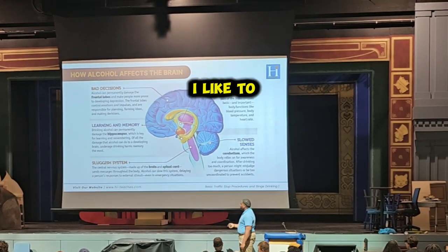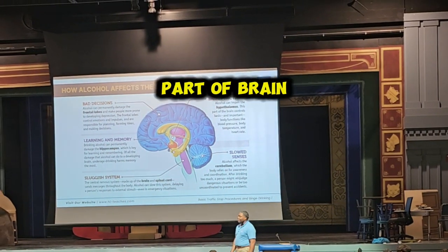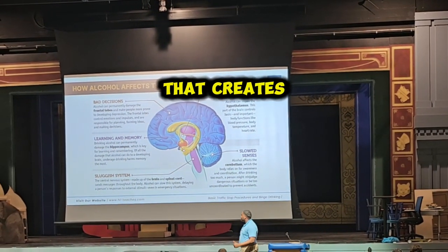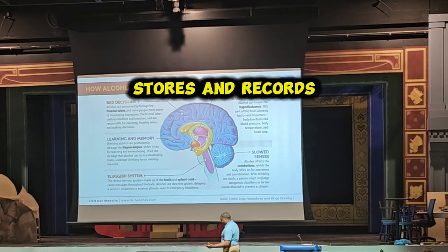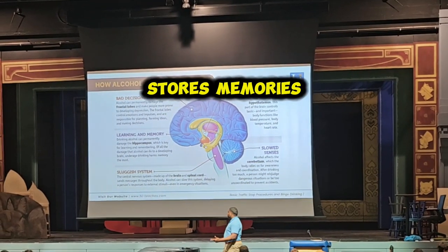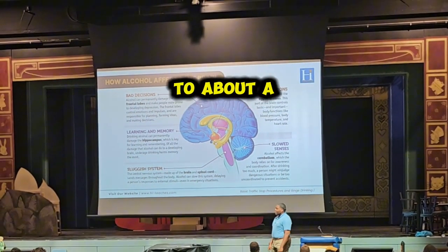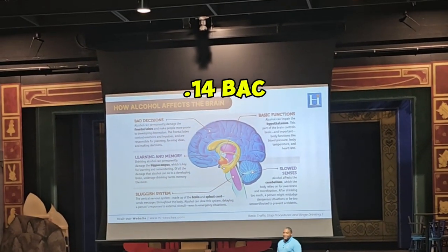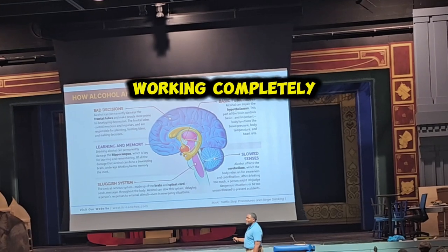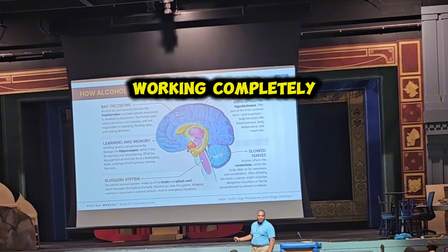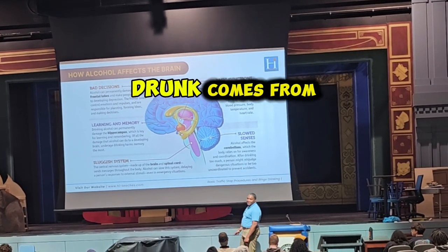The other part of the brain I like to focus on is the hippocampus. This is the part of the brain that creates, stores, and records memories. When you get to about a 0.14 BAC, this part of the brain stops working completely. This is where the term 'blackout drunk' comes from.